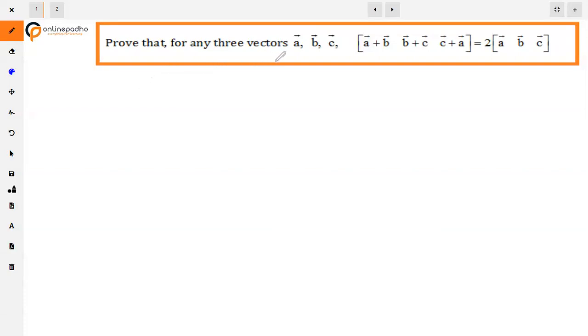The question is, prove that for any three vectors A, B, C, the scalar triple product of A plus B, B plus C, C plus A is equals to two times the scalar triple product of A, B, C.